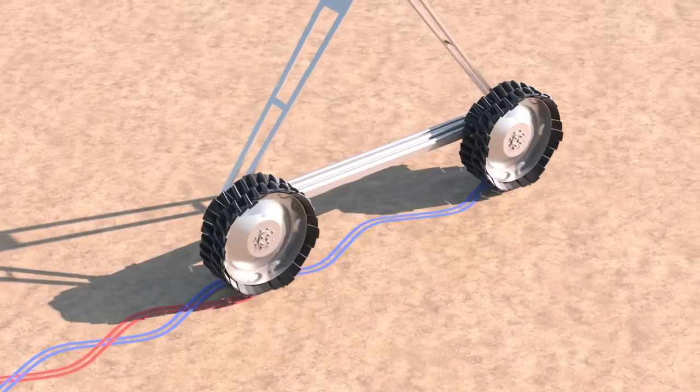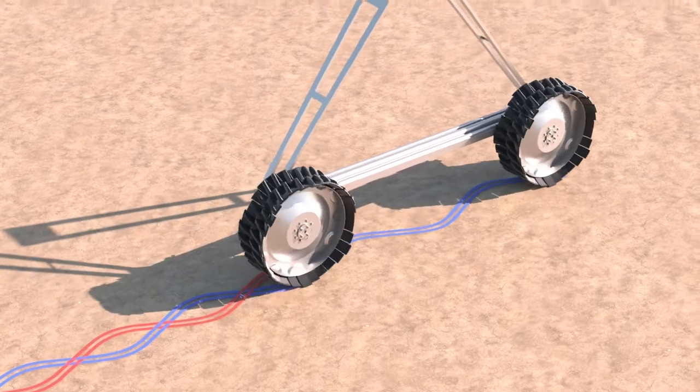The out-of-phase wheels push soil toward the center, creating a DNA helix shape in the soil.